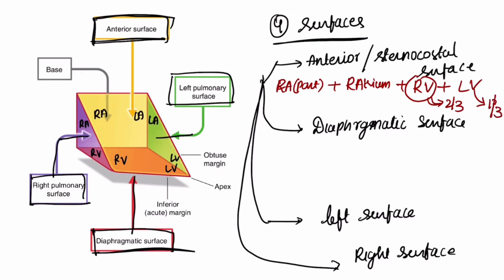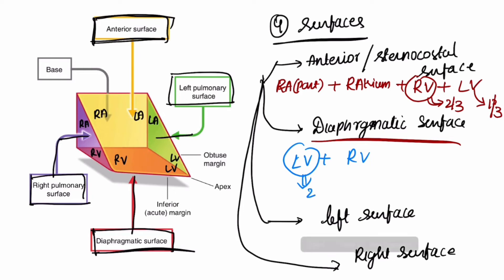The diaphragmatic surface is formed by the left ventricle and right ventricle. It is mostly formed by the left ventricle — that is two-thirds of the left ventricle and one-third of the right ventricle.